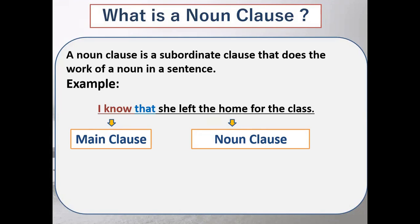That's why you can also call it a subordinating conjunction clause. The part which is not the main clause — the remaining part — is the noun clause. It may be called a subordinating conjunction clause, as it begins with a subordinating conjunction. And since it is a dependent clause, it is not the main clause.